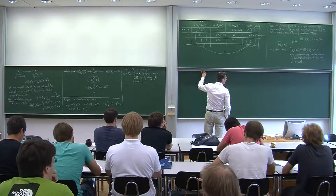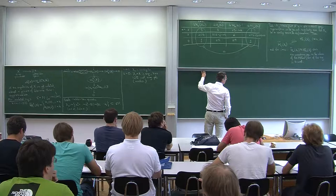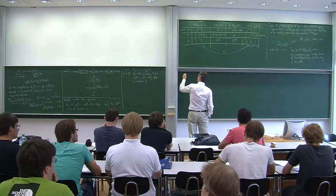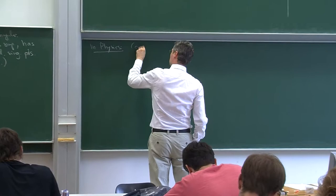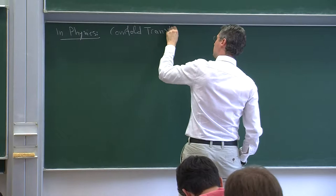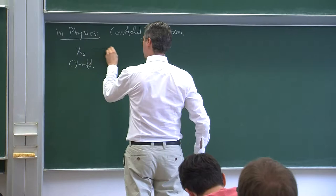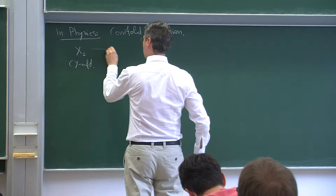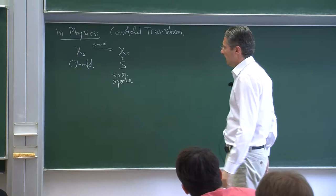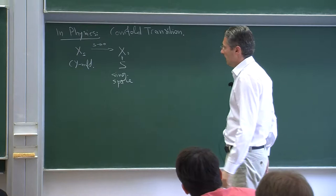I want to say a few words about relations to physics. In physics, there is what is called a conifold transition. The example we just considered is an instance of such a transition. You start with a Calabi-Yau manifold depending on a parameter X_S, let S go to 0, and obtain a singular space X_0.